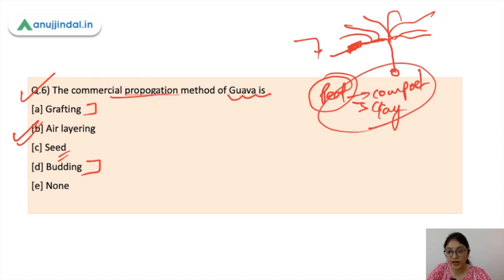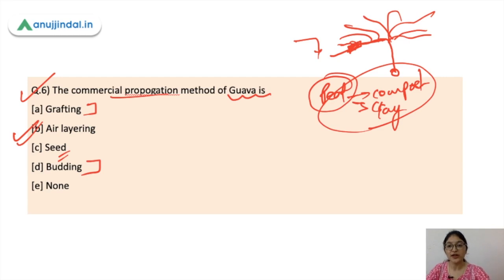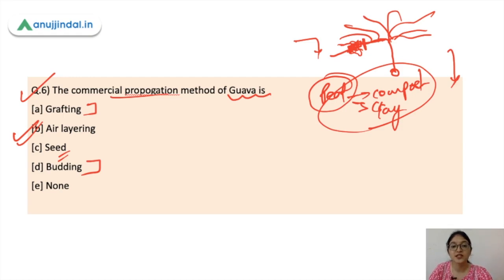You put a rooting medium or soil mixture on top of the exposed cut and then wrap it with plastic. After 2–3 weeks, you will get new bud formation, and inside the wrapped part, root formation occurs. Then you open it, cut it, and transplant this new part. This is the commercial propagation method of guava — air layering.